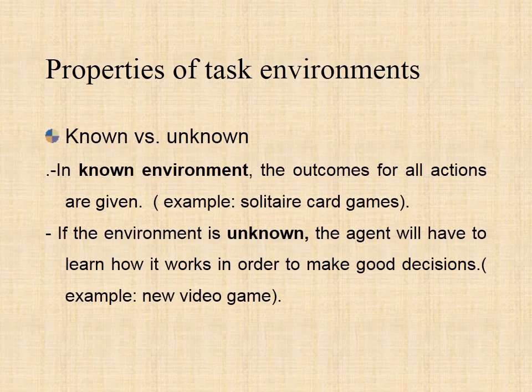Known and unknown are not actually a feature of an environment, but rather an agent's state of knowledge to perform an action. In a known environment, the results for all actions are known to the agent. While in an unknown environment, the agent needs to learn how it works in order to perform an action. It is quite possible for a known environment to be partially observable and an unknown environment to be fully observable. Solitaire card games are an example of a known environment, while a new online game is an example of an unknown environment.